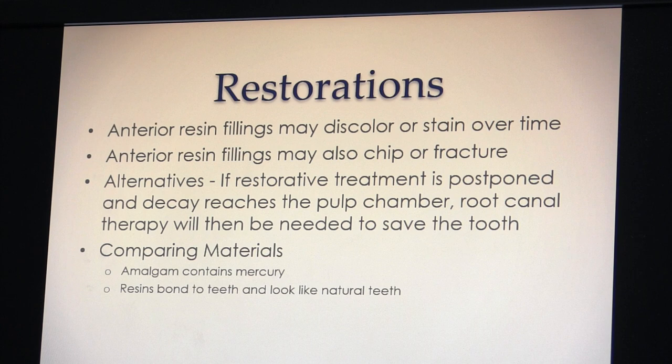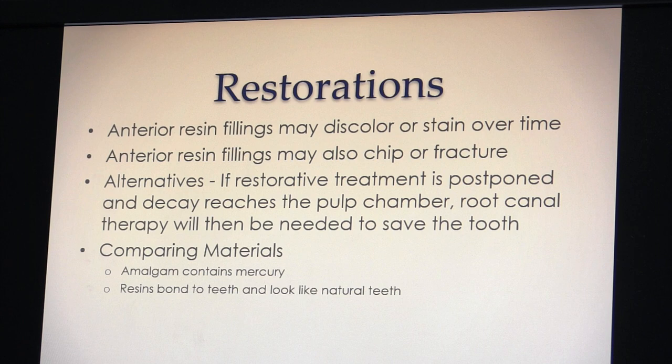If restorative treatment is postponed and decay reaches the pulp chamber, a root canal would be needed to save the tooth, depending on how deep the decay is or if there's a fracture down to the nerve, possibly followed by a crown. Comparing materials: amalgam contains mercury which patients and practitioners don't prefer; resin composites bond to the teeth and look like natural teeth, which patients prefer.